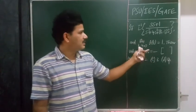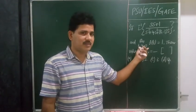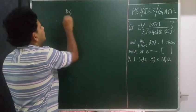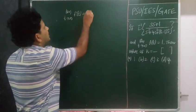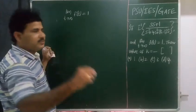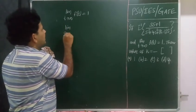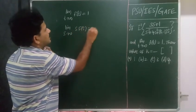Now one can see it is related to final value theorem of Laplace transforms. We are given that limit t approaches infinity, function f of t equals 1. According to final value theorem, this can also be expressed in terms of s: limit s approaches 0, s times f of s equals 1.